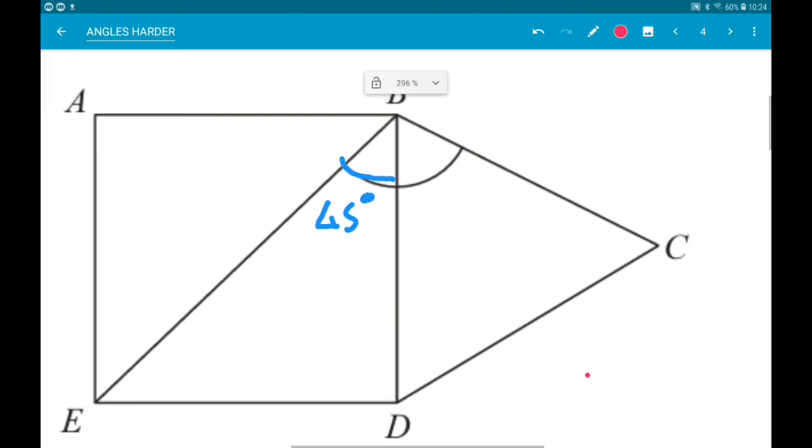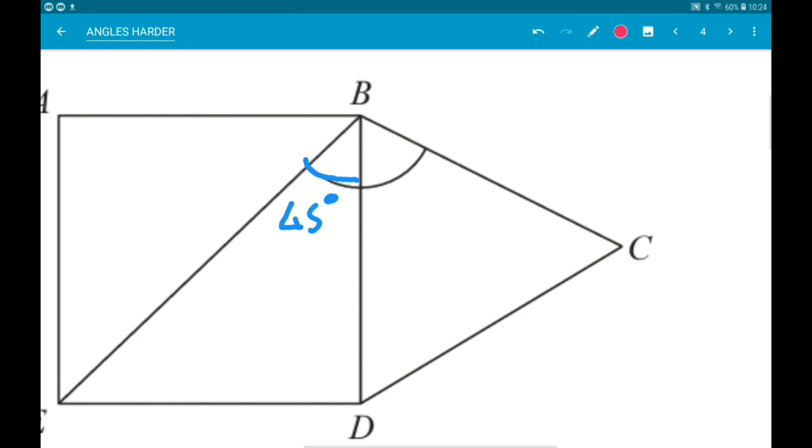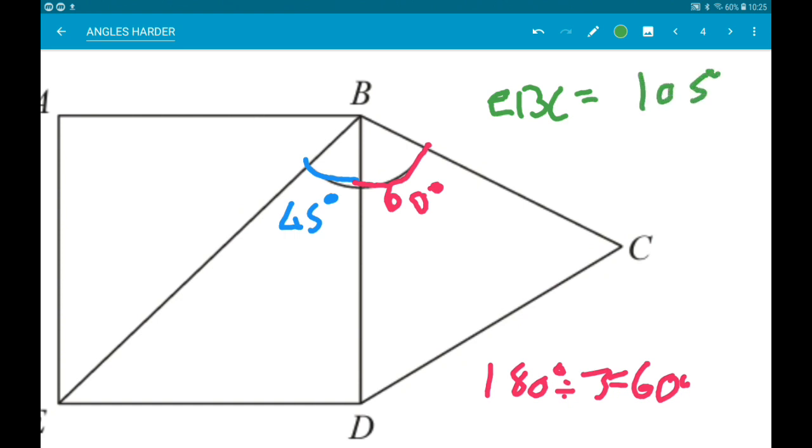Now inside of the triangle, remember it's an equilateral triangle, so all angles are the same. Angles in a triangle add to 180. So 180 divided by 3 gives us 60 degrees. So that's the red part. So altogether EBC is equal to 105 degrees.